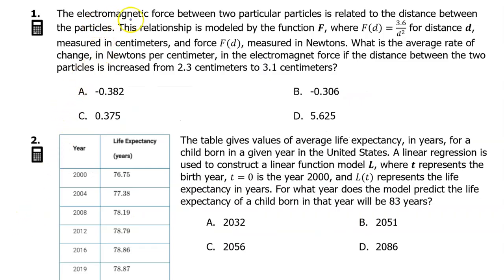Number 1. The electromagnetic force between two particular particles is related to the distance between the particles. This relationship is modeled by the function f, where f of d equals 3.6 over d squared, for distance d measured in centimeters, and force f of d measured in newtons. What is the average rate of change in newtons per centimeter in the electromagnetic force if the distance between the two particles is increased from 2.3 centimeters to 3.1 centimeters?